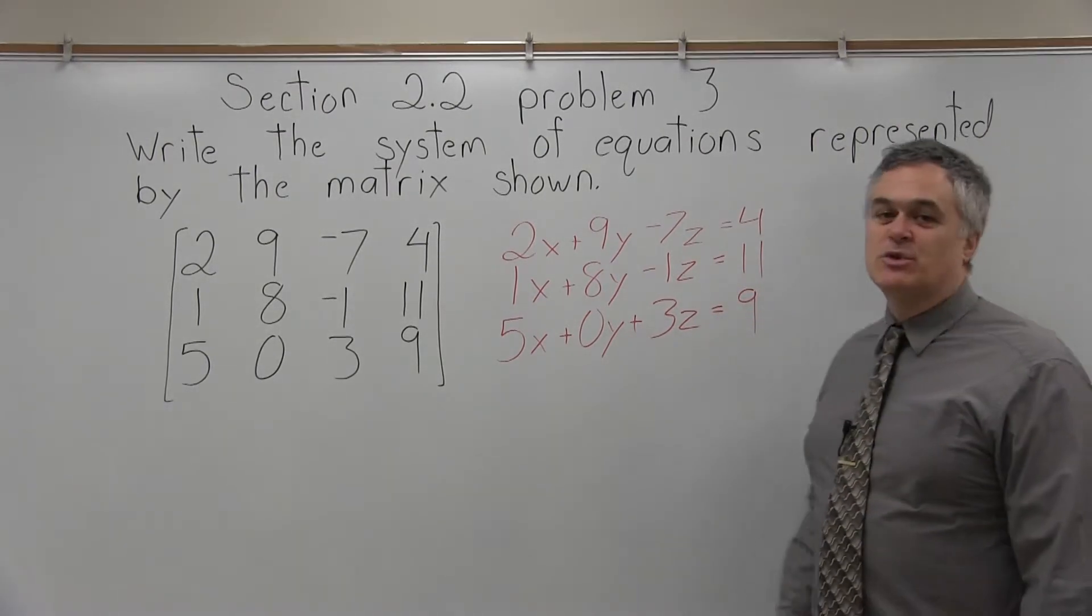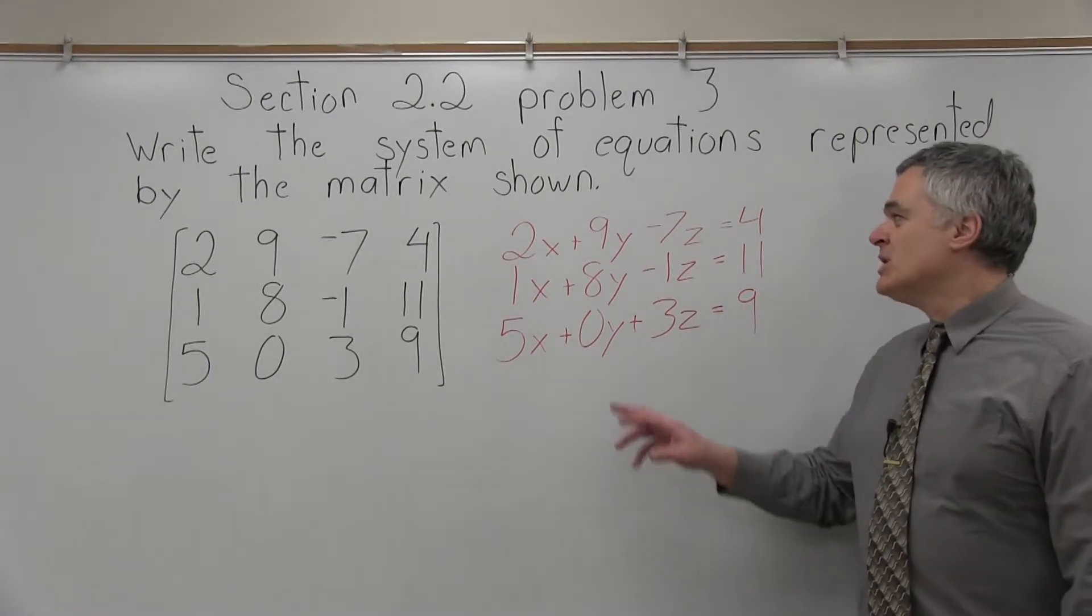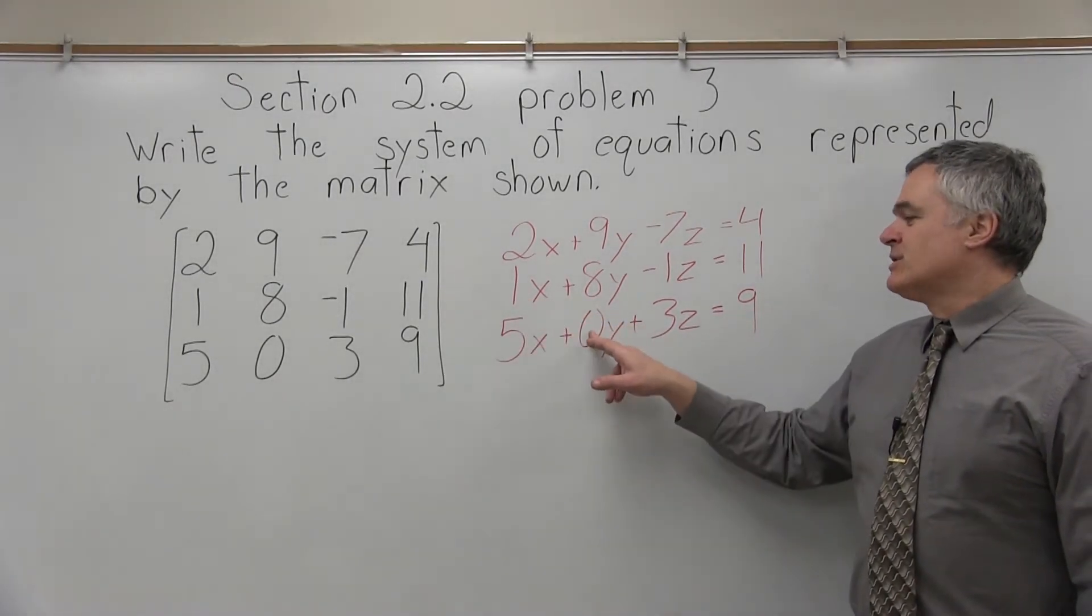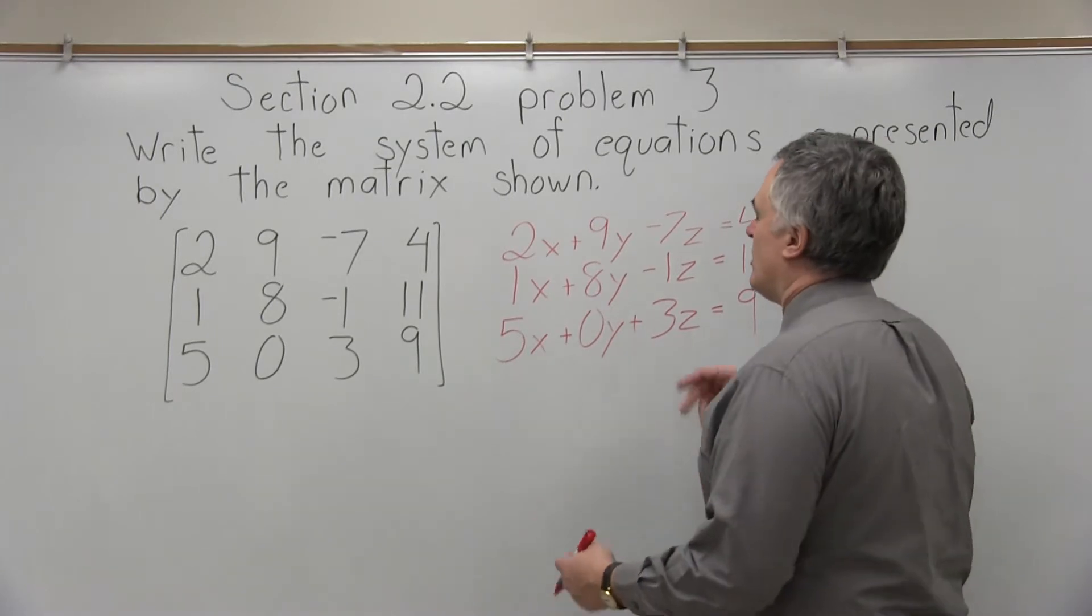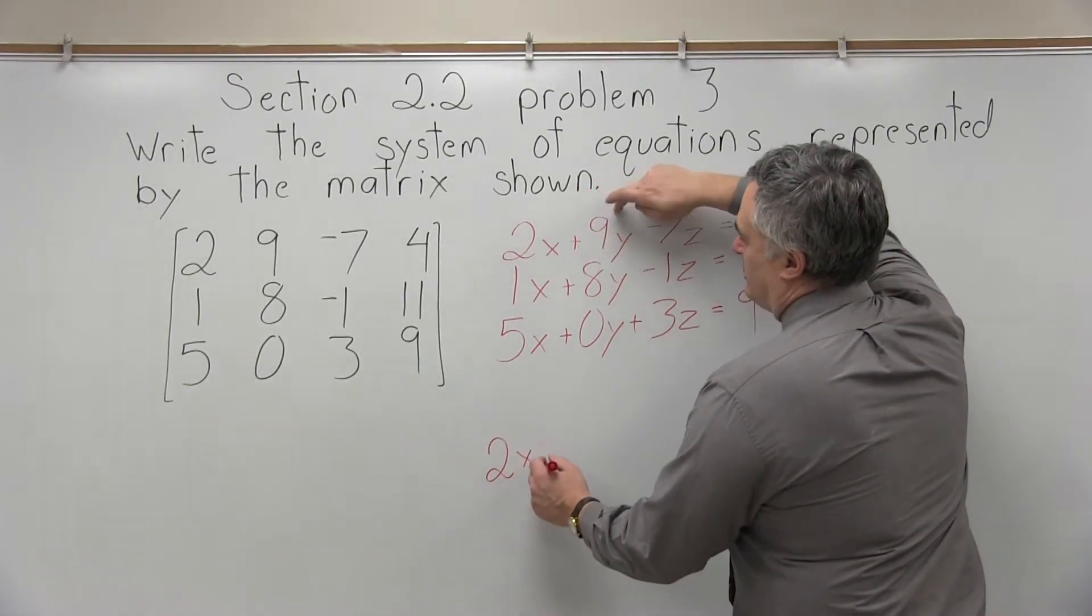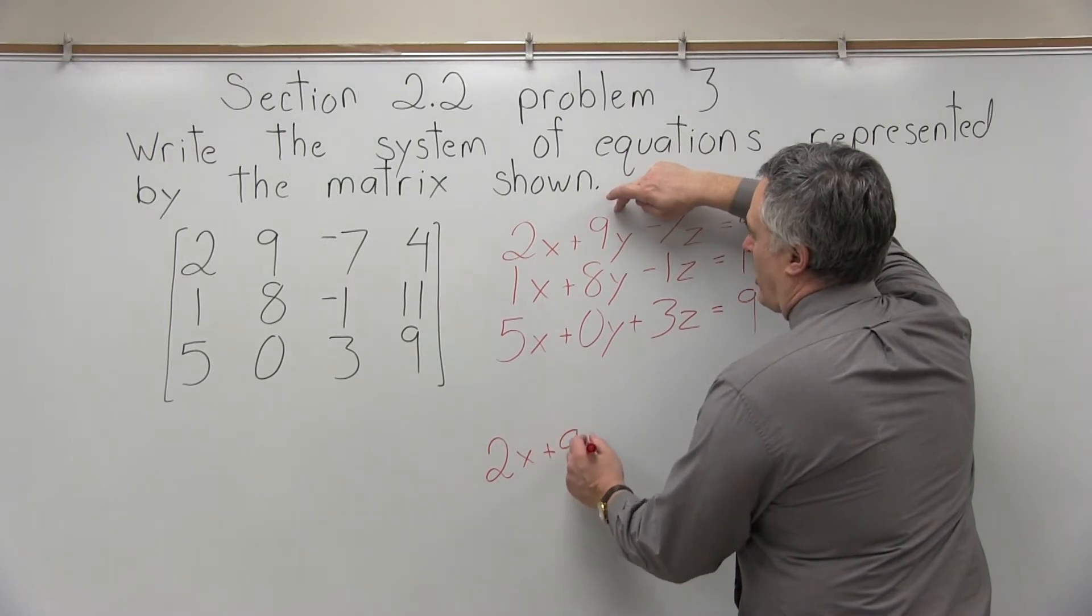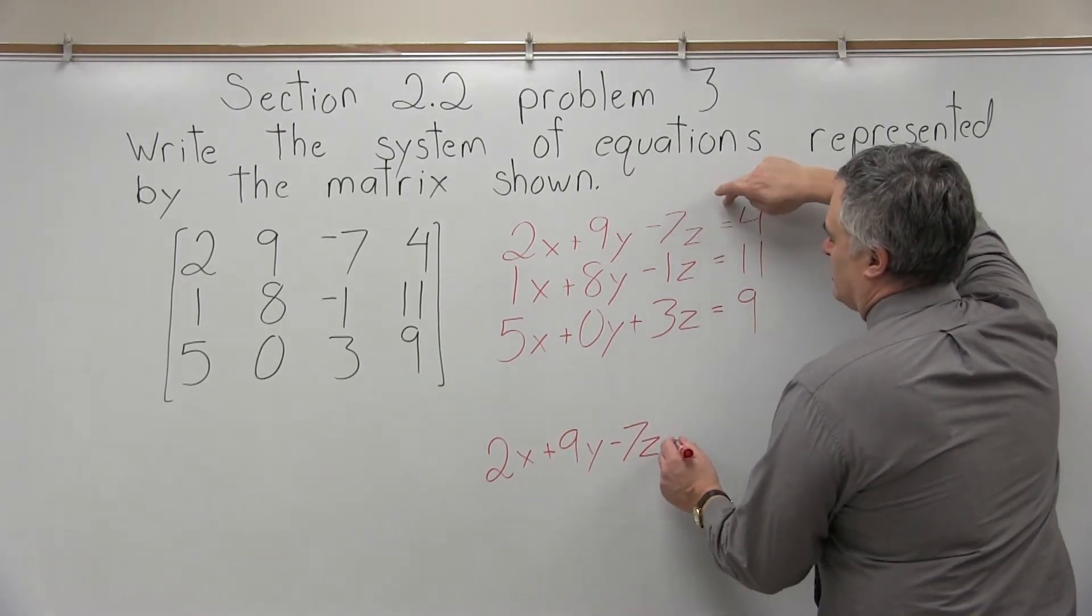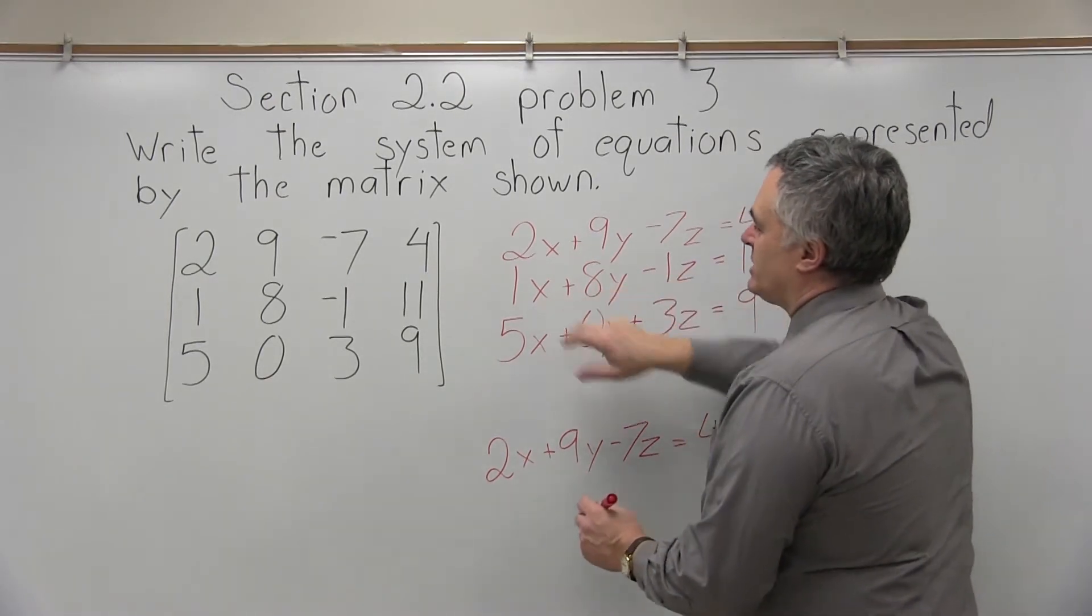Now that is the answer, but it's not the most traditional way to write it because a lot of times the 1x would just say x, and the 0y you wouldn't even bother to write. So if you want to write it in a more common way, the top equation will pretty much stay 2x plus 9y minus 7z equals 4. That one is not really going to change, but the middle equation...